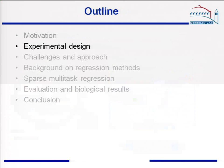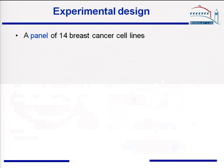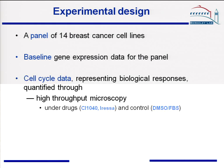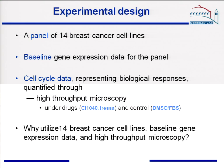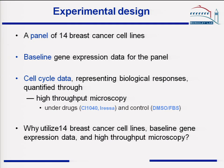Let's move to the experiment design. We have incorporated a panel of 14 breast cancer cell lines, and we measured the baseline gene expression data. We measured the cell cycle data that represents biological responses classified through high-throughput microscopy under two drug conditions and a control. The next question is: why do we utilize 14 cell lines, why do we measure baseline gene expression data, and why do we measure high-throughput microscopy?